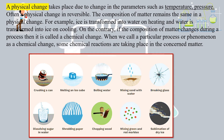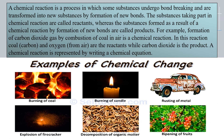A chemical reaction is a process in which some substances undergo bond breaking and are transformed into new substances by the formation of new bonds. The substances taking part in chemical reactions are called reactants, whereas the substances formed as a result of a chemical reaction by formation of new bonds are called products.